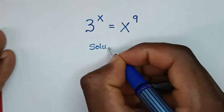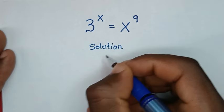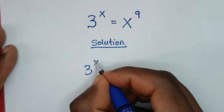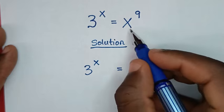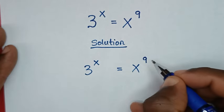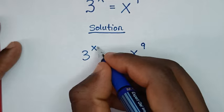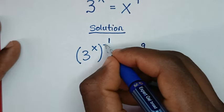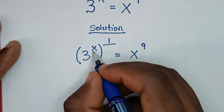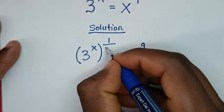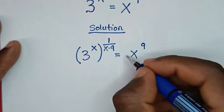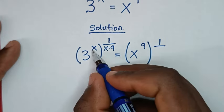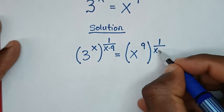Now, solution. From our problem, the exponent is 3 power of x is equal to x power of 9. Into the first step, we place brackets, then we power both sides by 1 over x times 9. So here x times 9, and also on this side we power by 1 over x times 9. So x times 9.